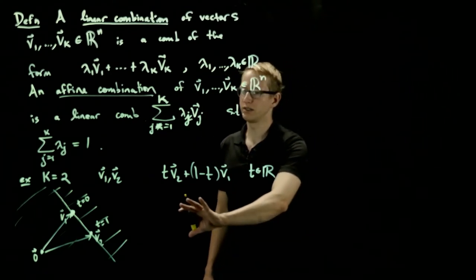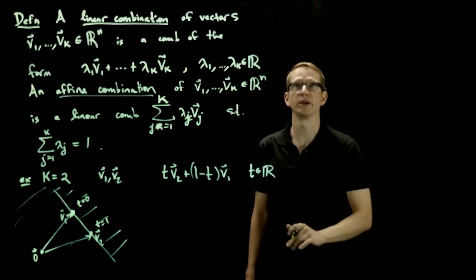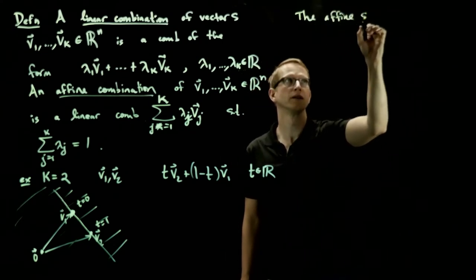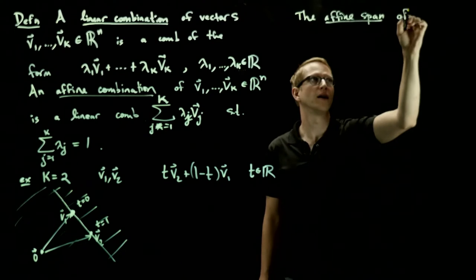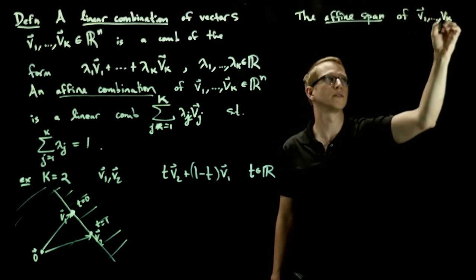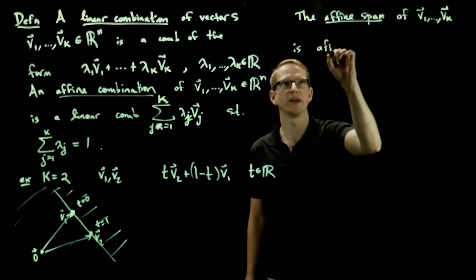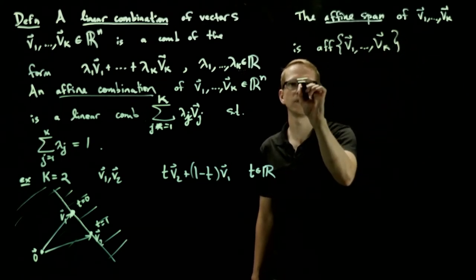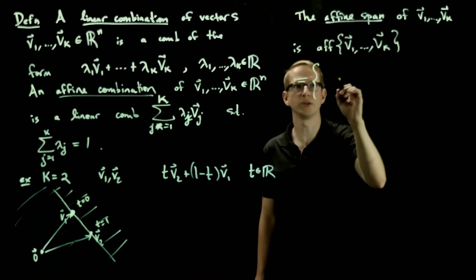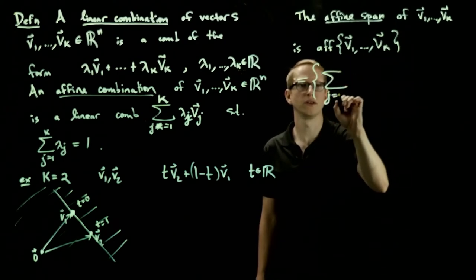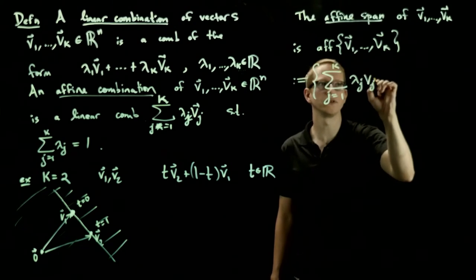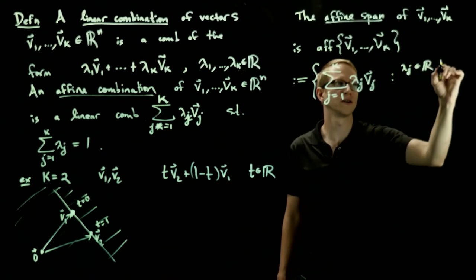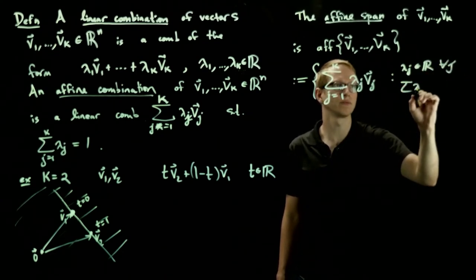And so just like we can define the span of vectors, we can also define the affine span of vectors. So the affine span of the vectors v1 through vk, denoted by AFF, is defined to be the set of all affine combinations. So the set of all lambda j vj such that all of the lambda j's are in R, and the sum of them equals 1.